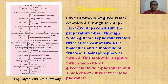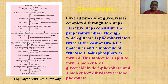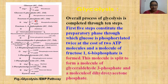The overall process of glycolysis is completed through 10 steps. It is completed in two phases: the first phase is called the preparatory phase and the second is called the payoff phase. Glucose is phosphorylated twice at the cost of two ATP molecules, and a molecule of fructose-1,6-diphosphate (bisphosphate) is formed. This molecule is then split into glyceraldehyde-3-phosphate and dihydroxyacetone phosphate.